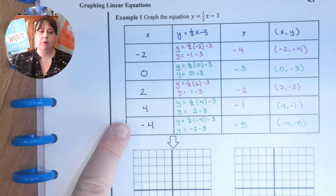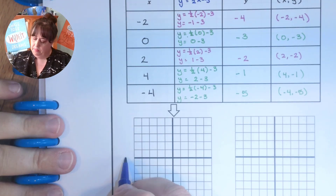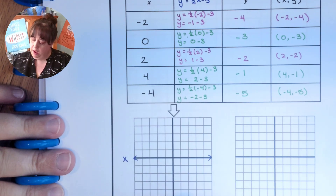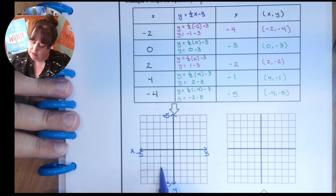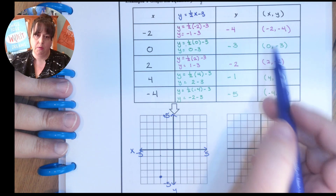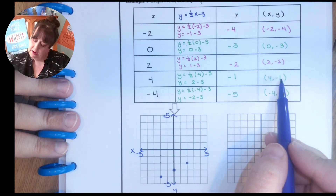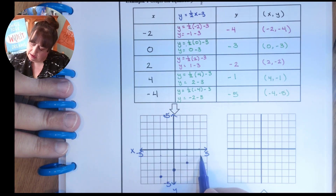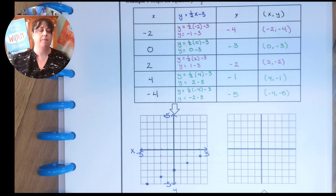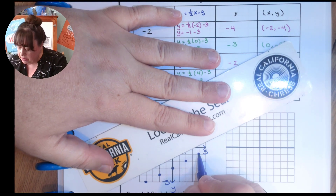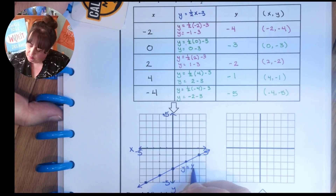Okay, check your work. When x was two I got the point two, negative two, and when x was negative four I got negative four, negative five. Now let's graph those points. Remember: x-axis with arrows, y-axis with arrows. Negative two, negative four: backwards two and down four. Zero, negative three: don't go anywhere and then down three. Two, negative two: over two and down two. Four, negative one: over four and down one. Negative four, negative five: backwards four and down five. There's the graph — connect it through all the points with a straight edge, put arrows on both ends, and name it y equals one half x minus three.